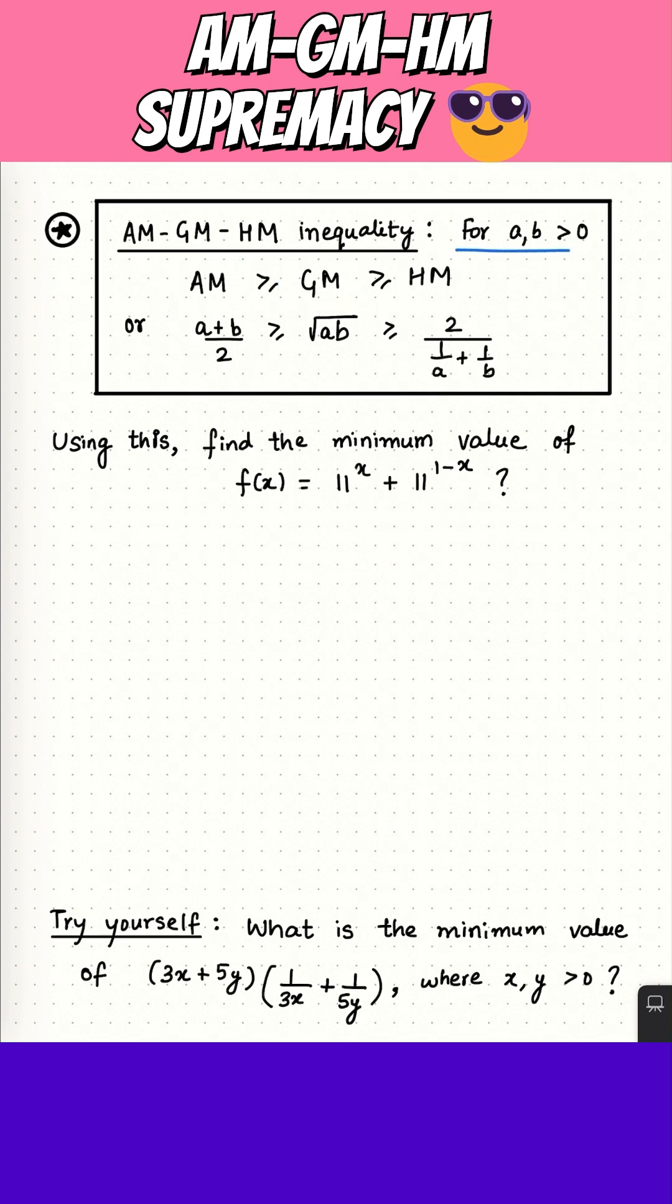That is, for positive numbers A, B, we have A plus B by 2 is always greater than or equal to their geometric mean, and it is always greater than or equal to their harmonic mean, which is 2 over 1 by A plus 1 by B.